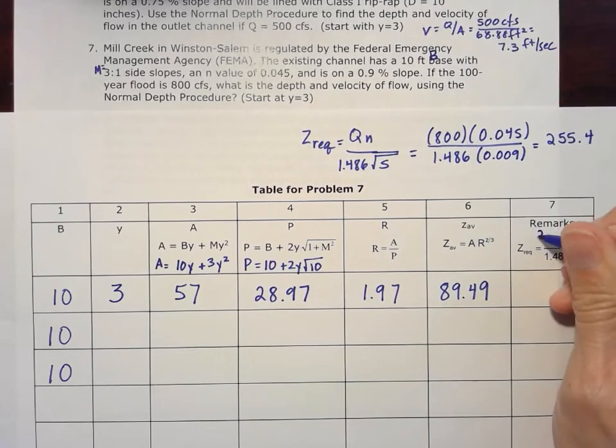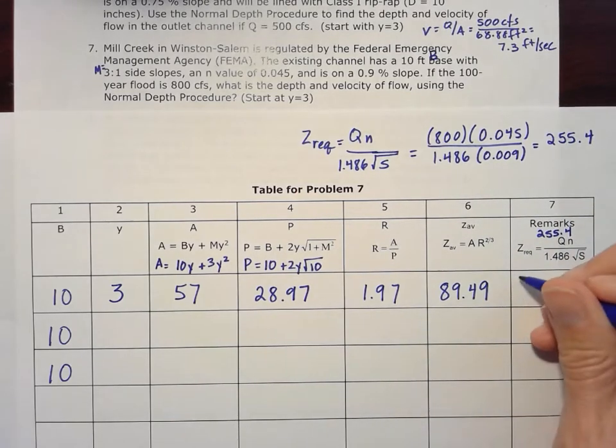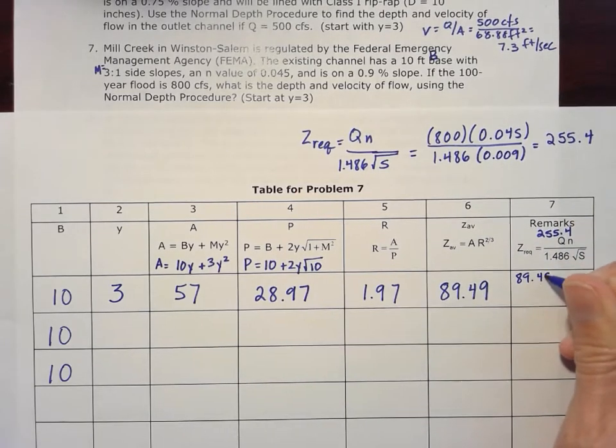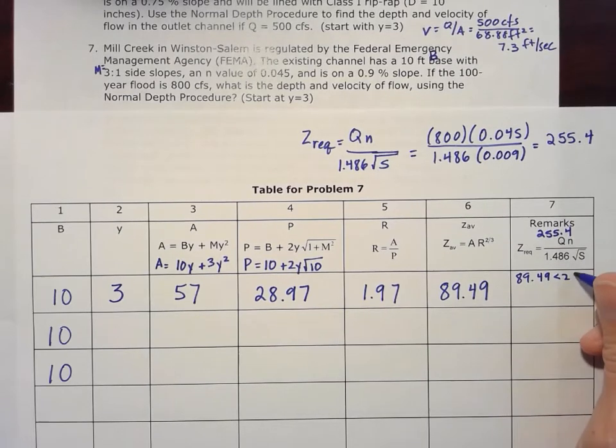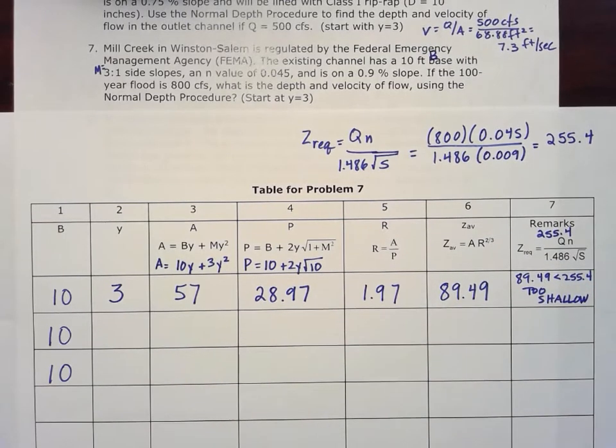So we'll put that up here for the value. 89.49 is much less than that 255.4, so that is too shallow. We're going to have to go deeper with that depth and increase that to get a better channel size.